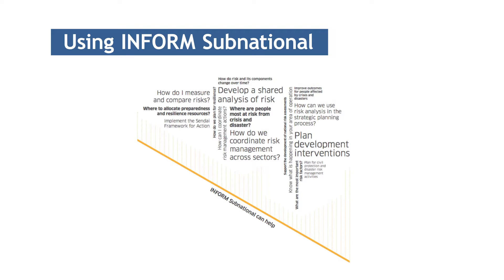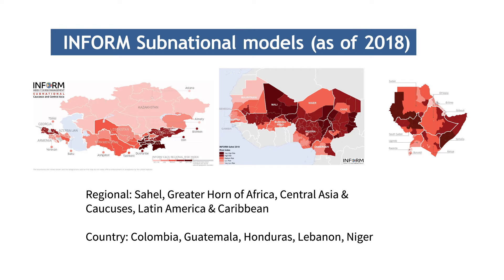The broad multi-sector risk analysis that INFORM delivers is needed everywhere so that we can better understand our operating environment and make better response decisions. INFORM subnational models are growing and expanding their use and reach. Do you have a new use that we have not yet included in this training? Please get in touch and let us know. The opportunities here are immense and we really hope that you join us in building and applying INFORM subnational in the governance, development, and humanitarian fields.